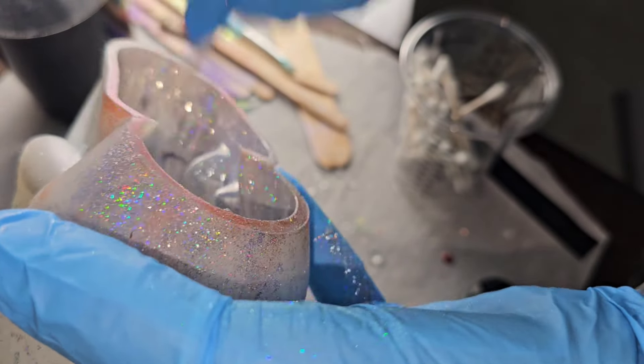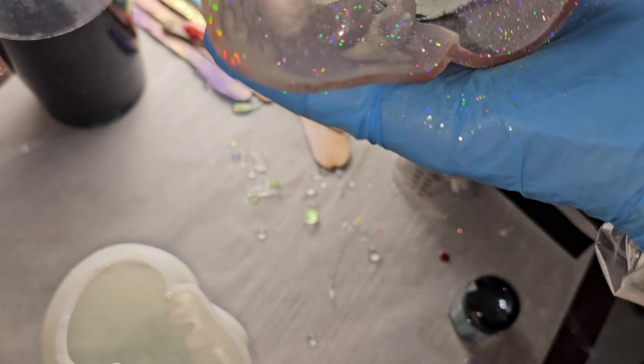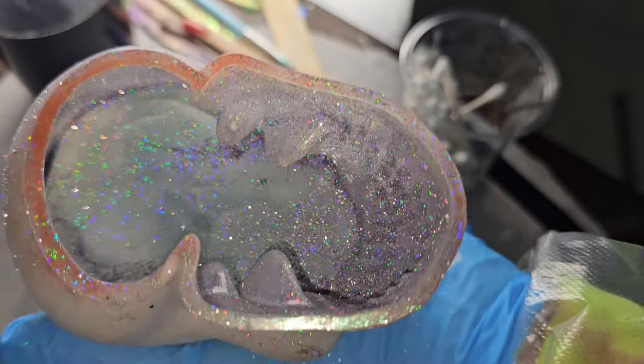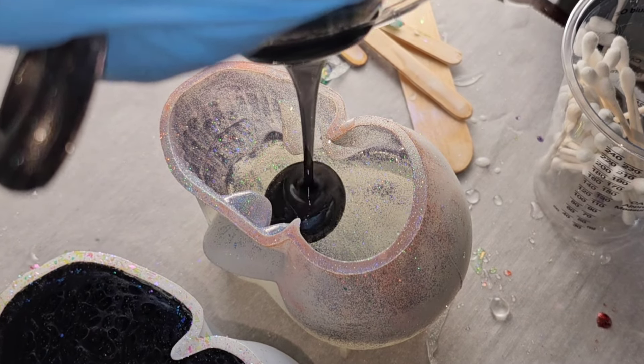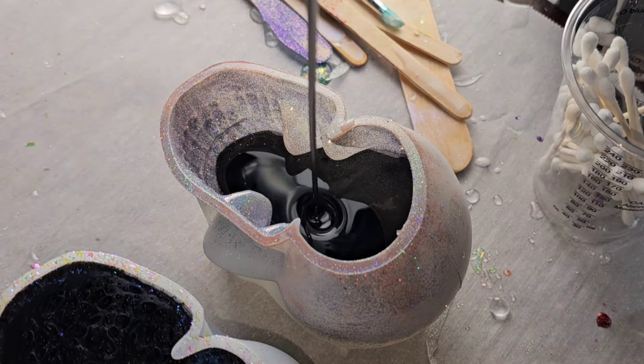This set of glitters comes with six different colors. You can get it off Amazon or the Let's Resin website. And my code NAPTIME will give you a discount. Here's how it was looking. And now we're going to go in with some black tinted epoxy and fill up the mold the rest of the way.